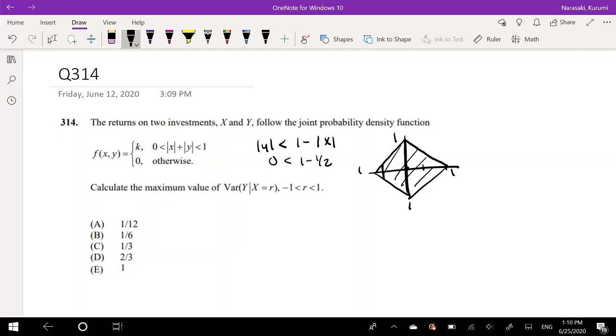But it's the biggest when r is equal to 0 because the range is pretty big, the span is pretty big. So to find the maximum value of the variance, we can just rewrite it as variance of y given x is equal to 0 because that's when we can maximize this variance.